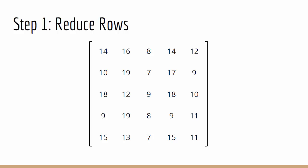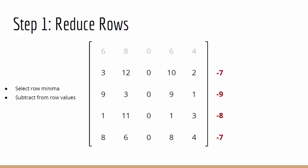Our first step is to reduce the rows. Looking at the first row, we see that 8 is the minimum value, so we subtract 8 from all the row values. Row 2 has a minimum of 7, row 3 a minimum of 9, row 4 a minimum of 8 and row 5 has 7. Subtracting these values from their respective rows leaves us with this new matrix.